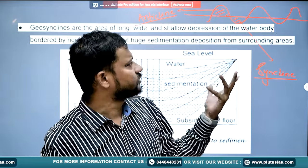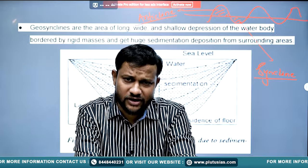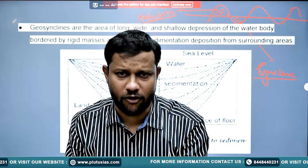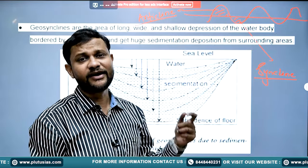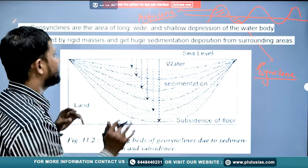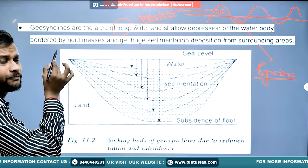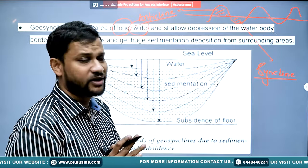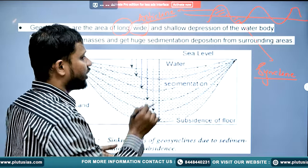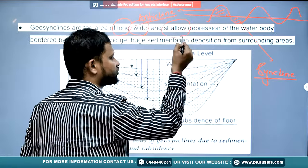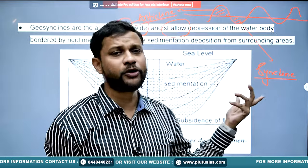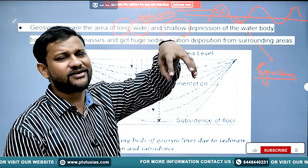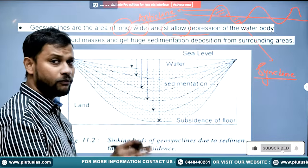The anticline is the uplifted part and the syncline is a low-lying depression of the fold system. When it comes to geosyncline, it must be connected with a depressional form. Geosyncline means a low depressional section of the earth which is long, wide, and to some extent narrow. It could be further divided into a deep depression and a shallow depression based on depth.